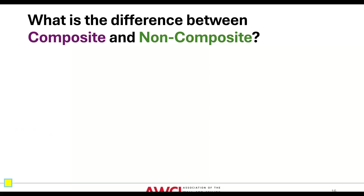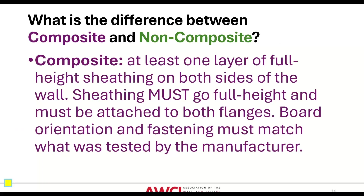What is the difference between composite and non-composite? Composite means one layer, full height, both sides, must go full height, must be attached to both flanges, and the board orientation and fastening must match what was tested by the manufacturer. Non-composite is everything else.